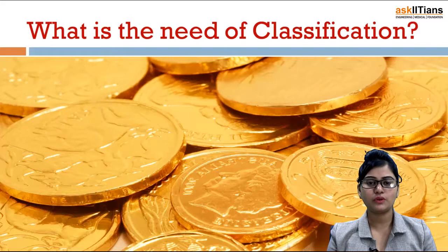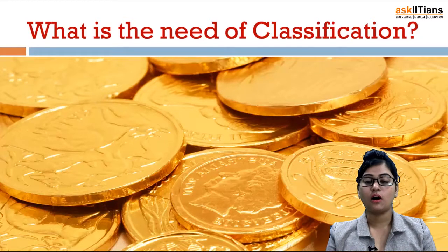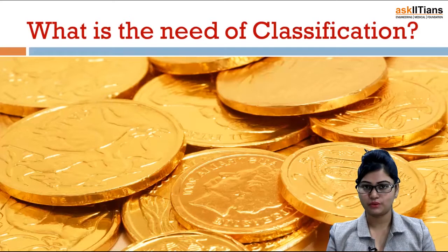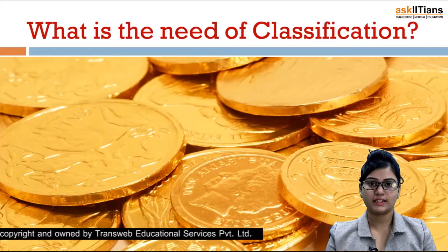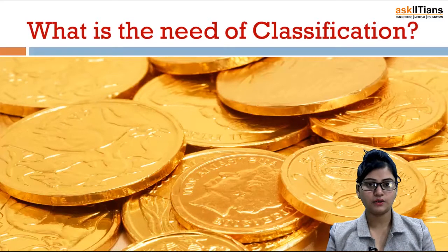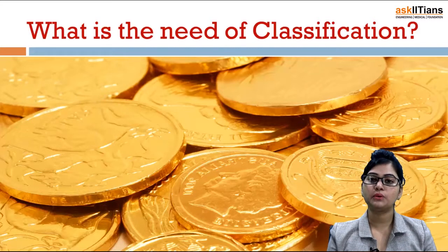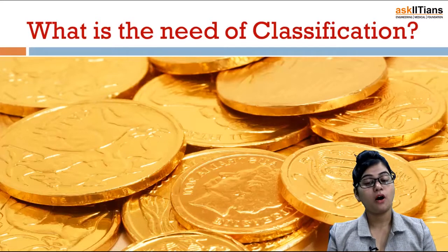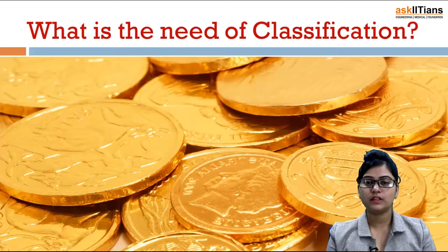To answer this question, I will put in front of you a very simple example. You are having a heap of coins of around seven countries. Coins of seven countries are placed in front of you and you are asked to take out a particular coin — for example, from the coins of India, a one rupee coin; from the coins of Hungary, one forint; and from the coins of the US, one cent. So how will you do this activity?